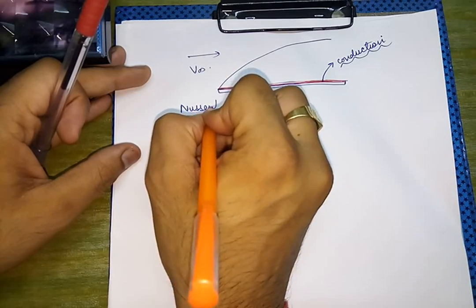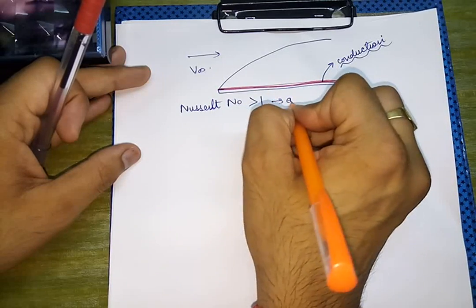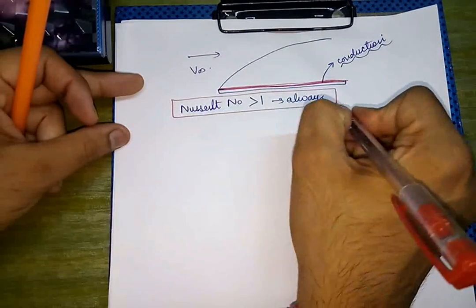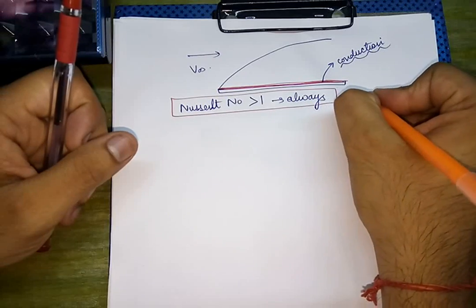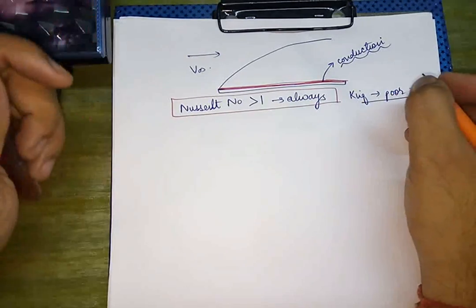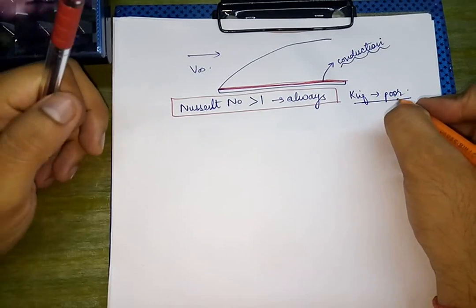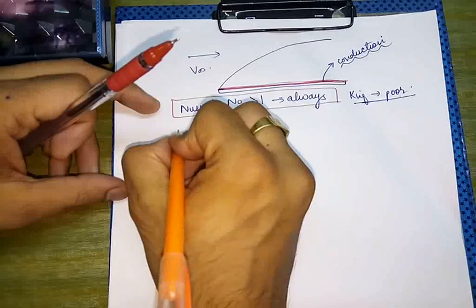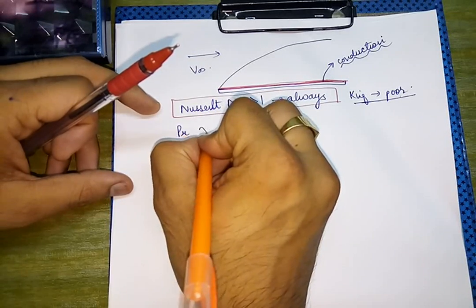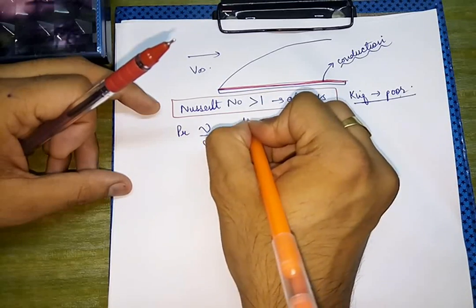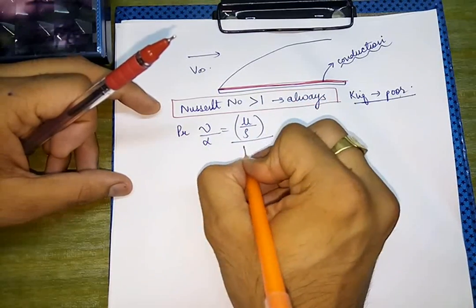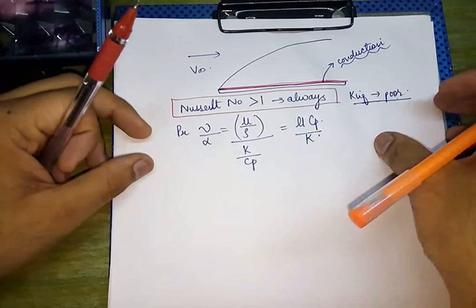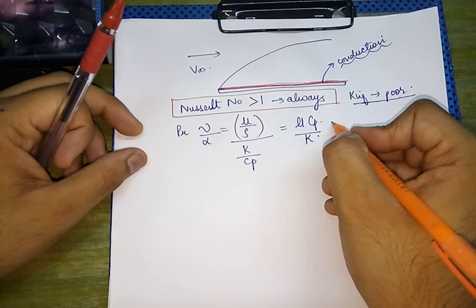The Nusselt number is always greater than 1, because the conductivity of liquids is very poor — fluids are poor conductors of heat. So Nusselt number is always greater than 1. If we talk about the Prandtl number, it is given by mu upon alpha, or (mu/rho) divided by (k/cp). This is the formula for Prandtl number.